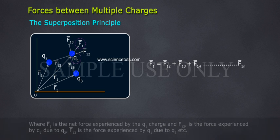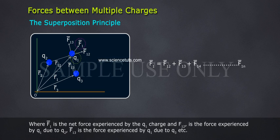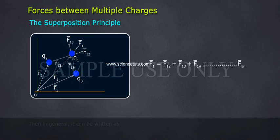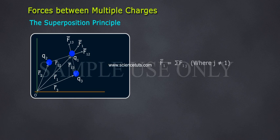F1 bar, where F1 is the net force experienced by the q1 charge, and F1 2 bar is the force experienced by q1 due to q2, F1 3 bar is the force experienced by q1 due to q3, etc. Then in general, it can be written as F1 bar equals sigma F1 j bar, where j not equal to 1.